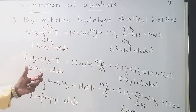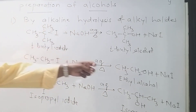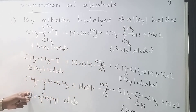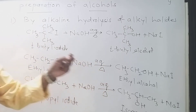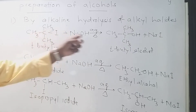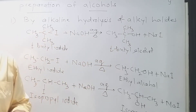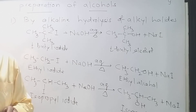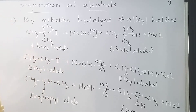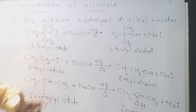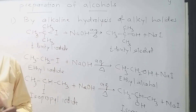So here we have examples of primary alcohol, secondary alcohol, and tertiary alcohol. The carbon skeleton is preserved, but the halogen atom is replaced by OH. This is the first method of preparing alcohols: when alkyl halides undergo alkaline hydrolysis, we get alcohols as the product.